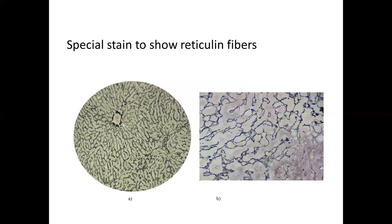As you saw, mucus doesn't stain properly with H&E, and there are many other things — collagen fibers, reticuline fibers, and elastic fibers — that all stain very lightly pink. So if you want to see certain structures not stained properly in H&E, you use a special stain. Here is another slide of the liver, where the hepatocytes are stained in light brown — the liver is stained specially to show its reticuline framework. Reticuline is a protein fiber, a type of collagen fiber, forming the connective tissue framework of the liver.